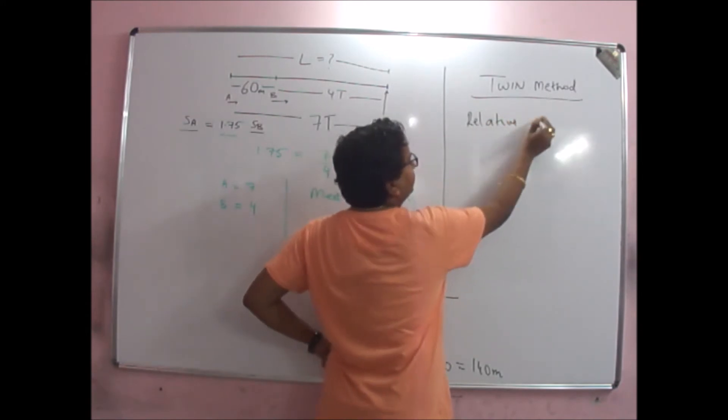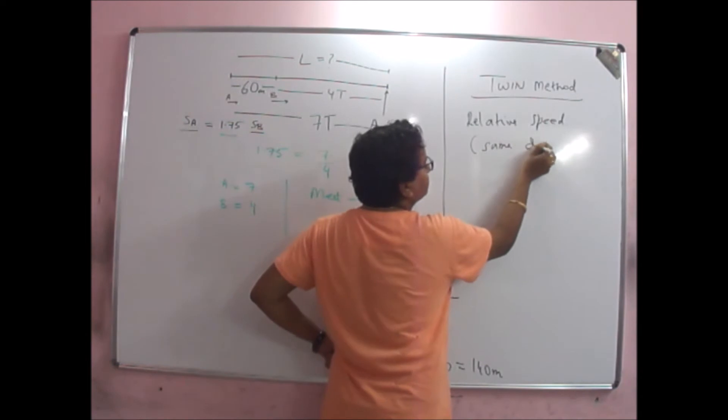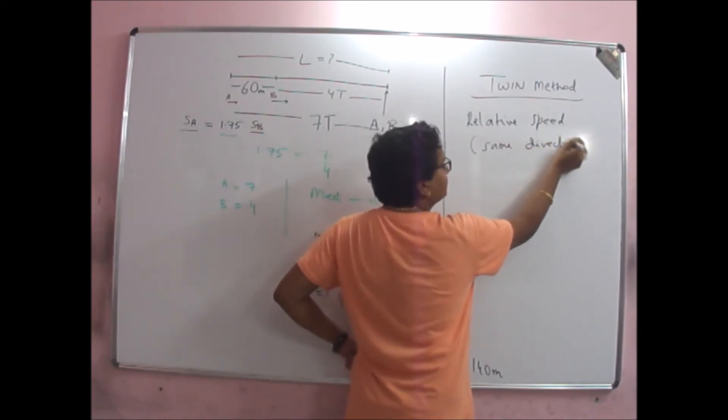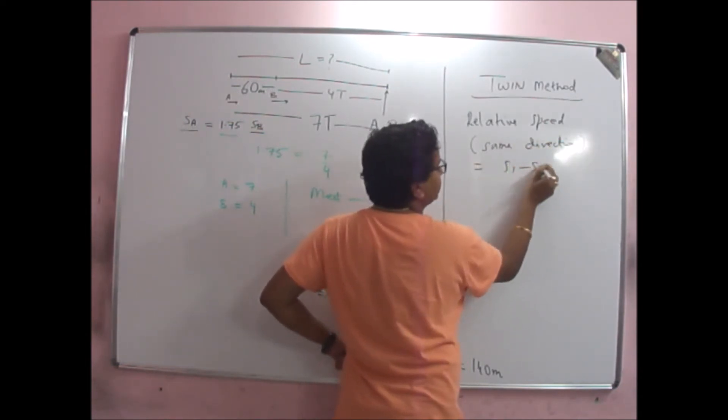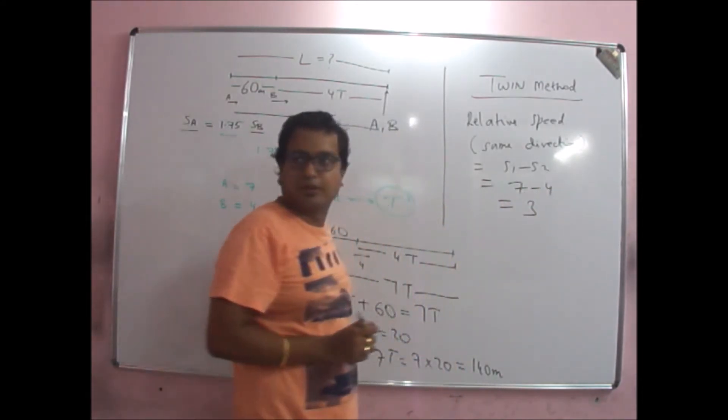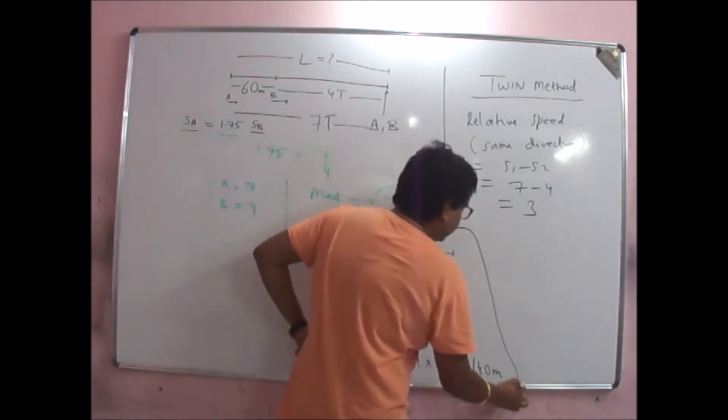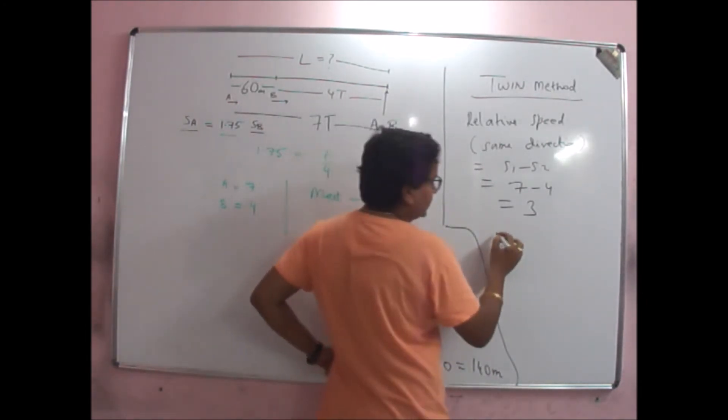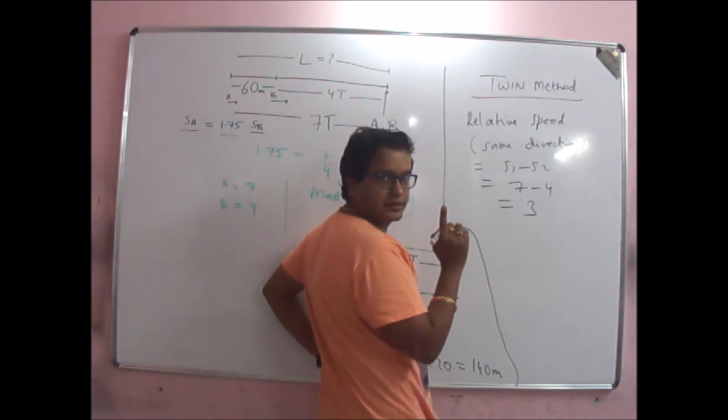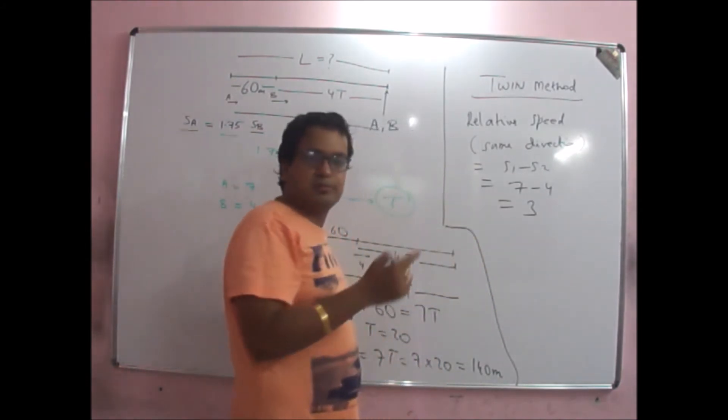Now, you need to know that relative speed in the same direction is given by S1 minus S2. In this case, which will be equal to 3. Now, the original gap between the two is 60 meters. And the difference of speed is 3 meter per second.